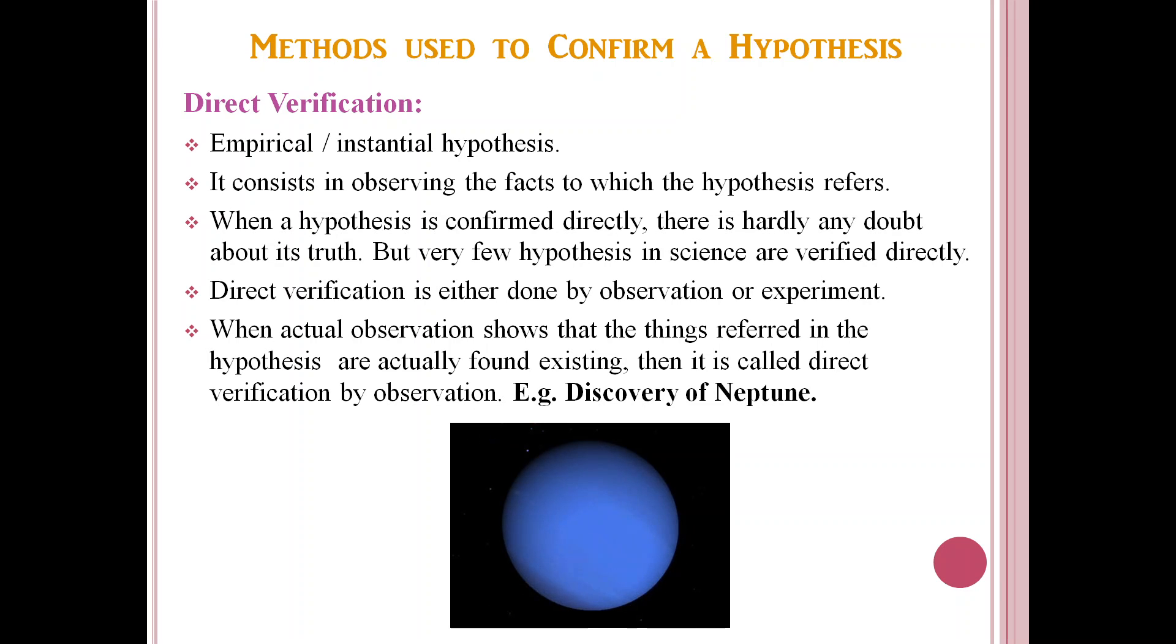In this, the hypothesis put forward was that there is another planet beyond Uranus which was disturbing the orbit of Uranus and its gravitational force. This hypothesis could be verified directly by observing the new planet through the Berlin's telescope.